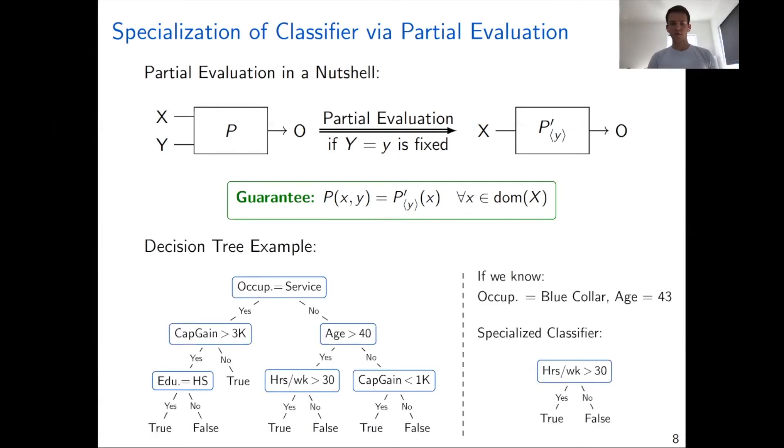Let's consider an example with a decision tree. Here each node is a decision. If the decision holds, we go left and if it doesn't hold, we go right. If we know that the values for occupation is always equal to blue collar and the value for age is always equal to 43, then for all instances where this holds, we will always follow this particular path and reach this leaf node at the bottom. So we can essentially specialize this classifier to just one single decision, a single if statement, which is much more efficient than to always evaluate the entire tree for each instance that comes in. This is the idea of partial evaluation and how we apply it to the classifier.